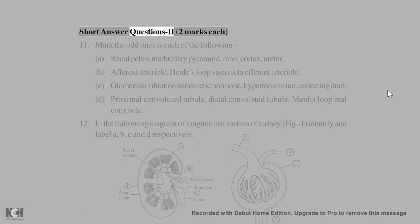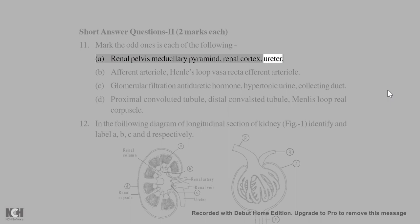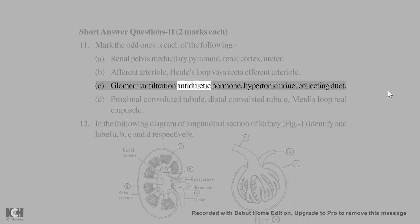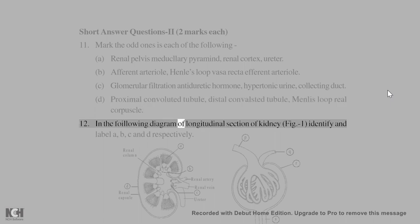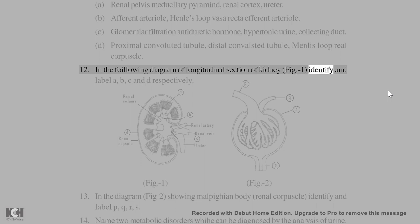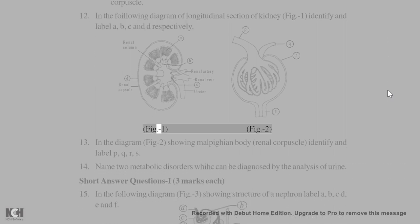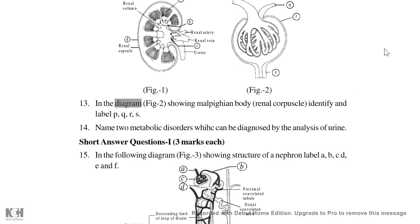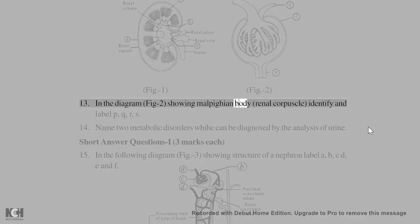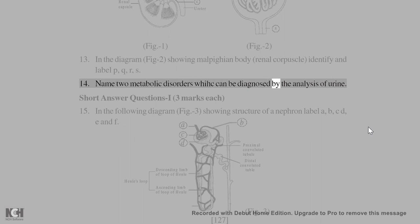Short answer questions (2 marks each): 11. Mark the odd one out in each of the following: (a) renal pelvis, medullary pyramid, renal cortex, ureter; (b) afferent arteriole, Henle's loop, vasa recta, efferent arteriole; (c) glomerular filtration, antidiuretic hormone, hypertonic urine, collecting duct; (d) proximal convoluted tubule, distal convoluted tubule, Henle's loop, renal corpuscle. 12. In the diagram (Fig. 1) of longitudinal section of kidney, identify and label A, B, C, and D. 13. In the diagram (Fig. 2) showing Malpighian body (renal corpuscle), identify and label P, Q, R, S. 14. Name 2 metabolic disorders that can be diagnosed by analysis of urine.